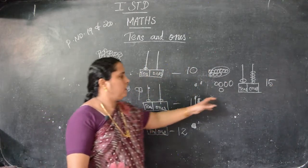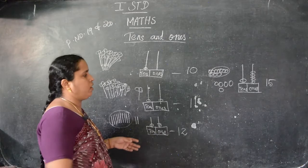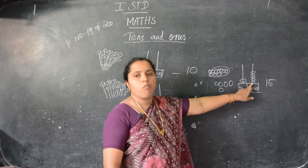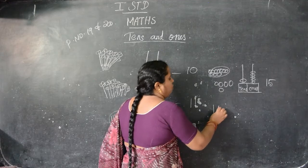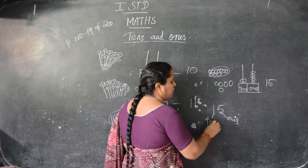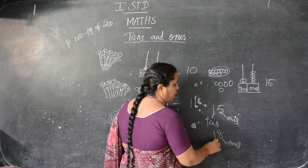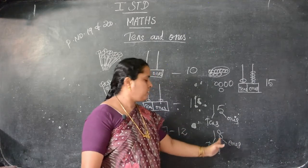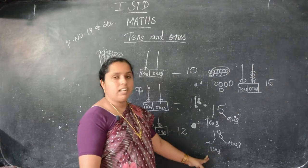How do you understand children? 15 — how do you conclude that? 10s and 1s? The first number is the 1s, the second number is the 10s. Like here see: 15 means 5 is the 1s and 1 is the 10s. Like that, 18 — 8 is the 1s and 1 is the 10s. So first one is the 1s, after that the second number is the tens. Have you understood children — which is tens and which is ones?